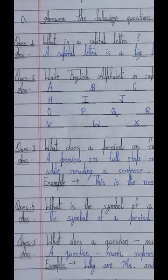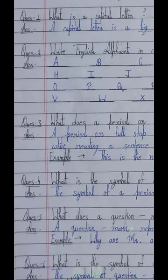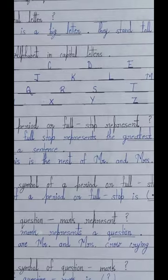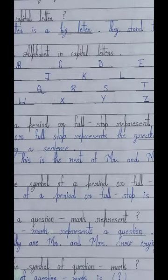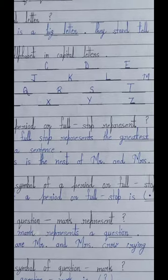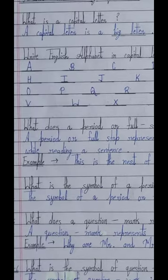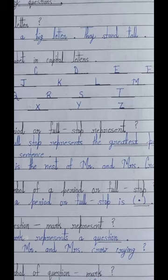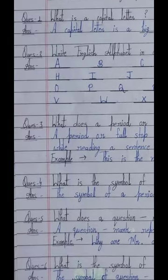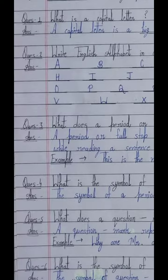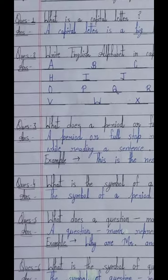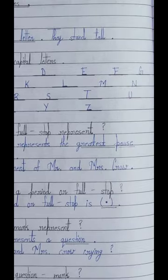There are 26 letters in our English alphabet and we can see that all these letters are big letters - they stand tall with their heads raised. Now let's see question number 3: 'What does a period or full stop represent?' Represent means 'pradarshit karna'. A full stop represents the greatest pause while reading a sentence.